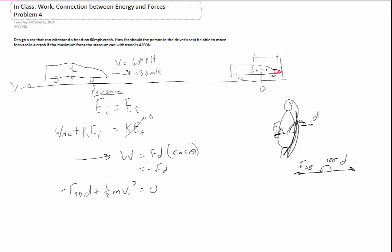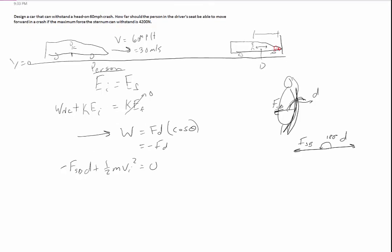And so from this, we can basically find what we're trying to find, which is how far the person in the driver's seat should be able to move forward in a crash. If we add force times distance on both sides, we get one half mv one squared, mv initial squared is equal to f of the seatbelt times the distance. And we already know the force of the seatbelt. We're trying to solve for the distance. So we get mv initial squared over 2 times the force of the seatbelt.